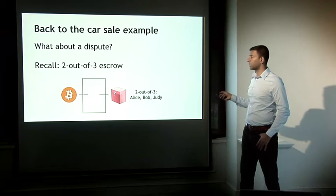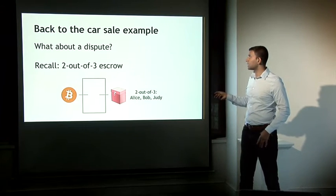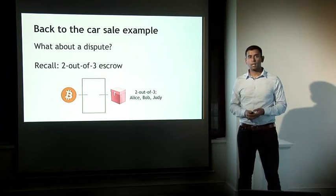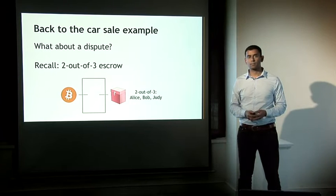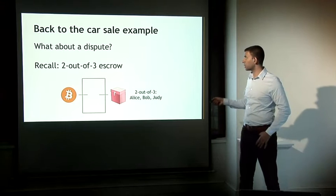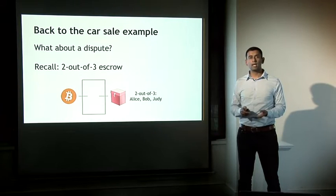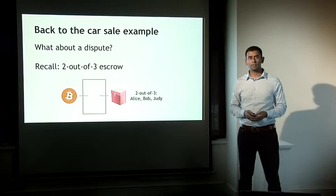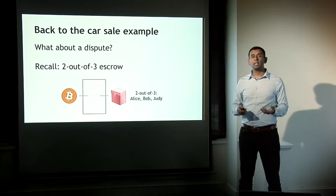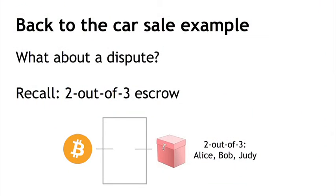Now let's go back to the car sale example and ask what happens if there is a dispute. Perhaps the seller sold a lemon car and the buyer wants to reverse the transaction. Recall escrow transactions — particularly a two-out-of-three escrow — where in addition to the buyer and seller there is a judge or mediator. The buyer transfers bitcoins not directly to the seller but to a two-out-of-three address controlled jointly by the buyer, the seller, and a mediator.